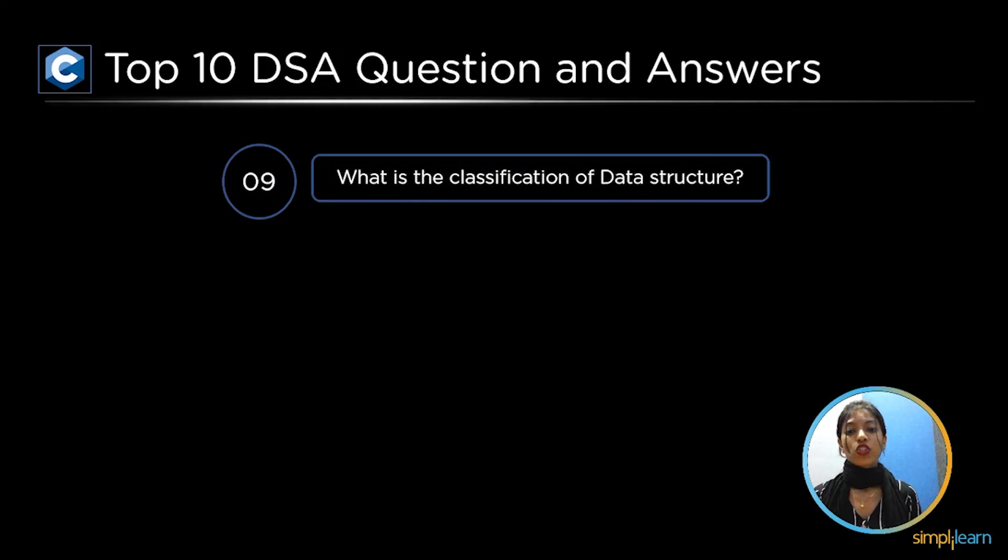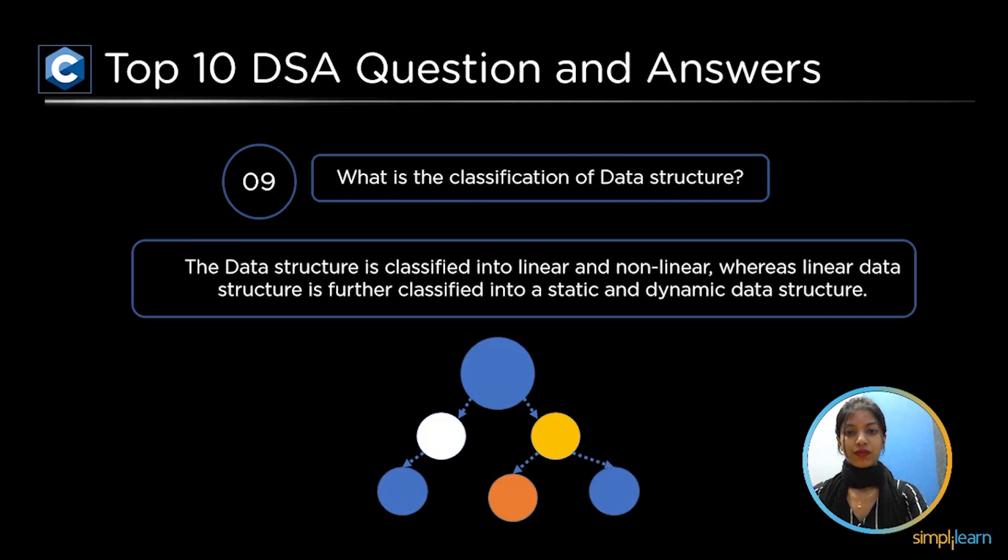Next, the top 9th question is what is the classification of data structure? Structure is classified into linear and nonlinear whereas linear data structure is further classified into a static and dynamic data structure.